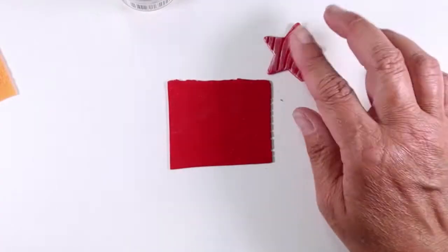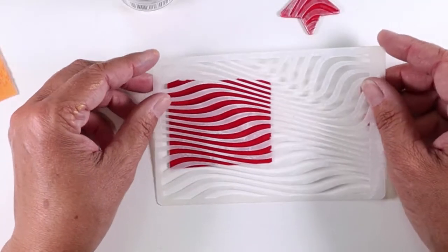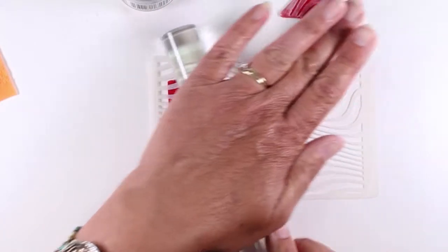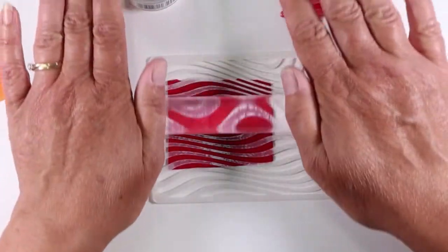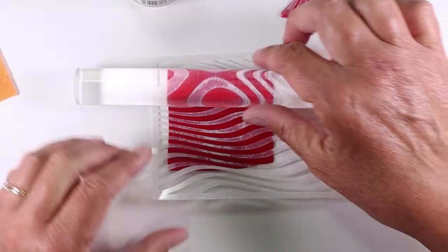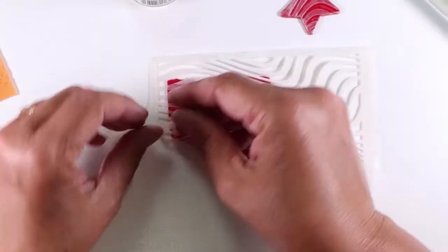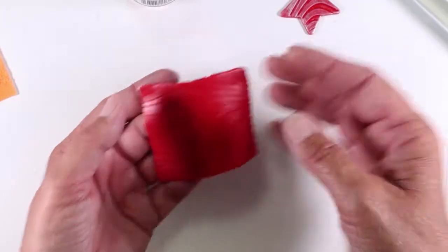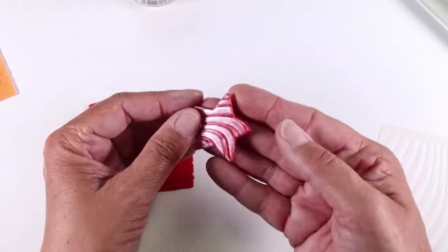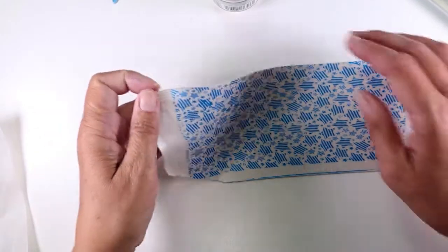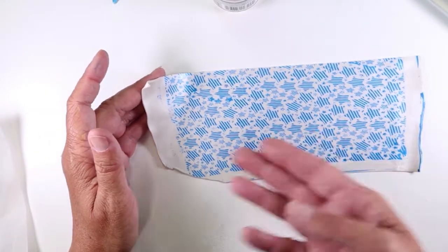For this one I put my stars and stripes stencil on some more that red clay and then rolled over it pretty firmly with the acrylic roller because what I'm doing here now is I'm using it as a texture rather than as a stencil so when you peel it up you have that design and then I just went over it with some pearl mica powder.